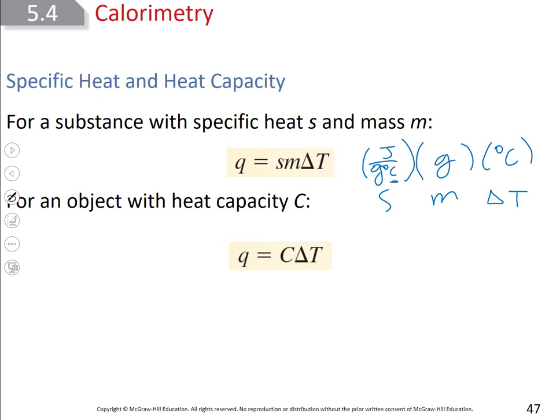You could also use heat capacity if heating up an entire object — you may not know what it is or whether it's a pure substance. In that case, Q = C·ΔT. Heat capacity is in joules per °C, ΔT is in °C, so multiplying the two leaves Q in joules. Make sure your units are canceling out.